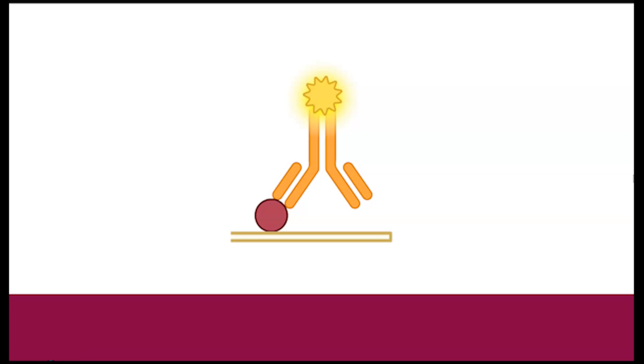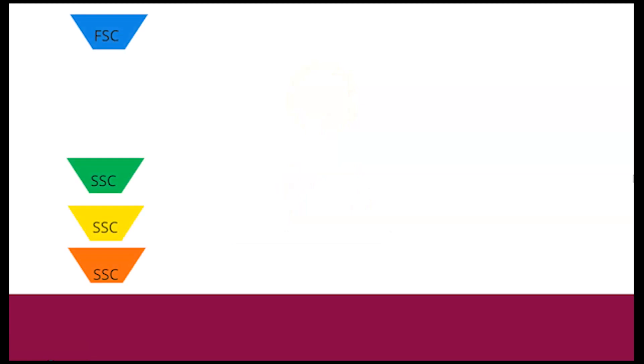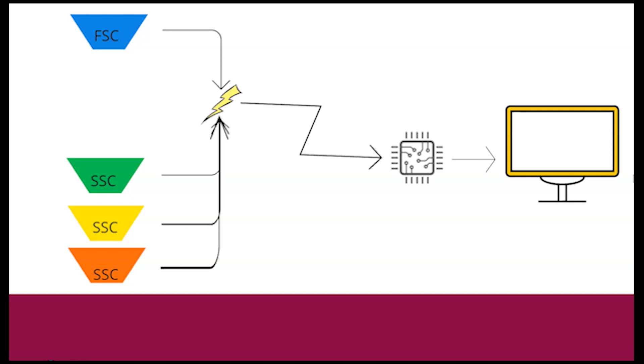The detectors have now received the signals from all the scattering of the laser light. To analyze this data using the third and final component, being the electronic system, the signal exits the detector as a current pulse. It then is run through various amplifiers and converters that allow it to be converted into a digital signal.